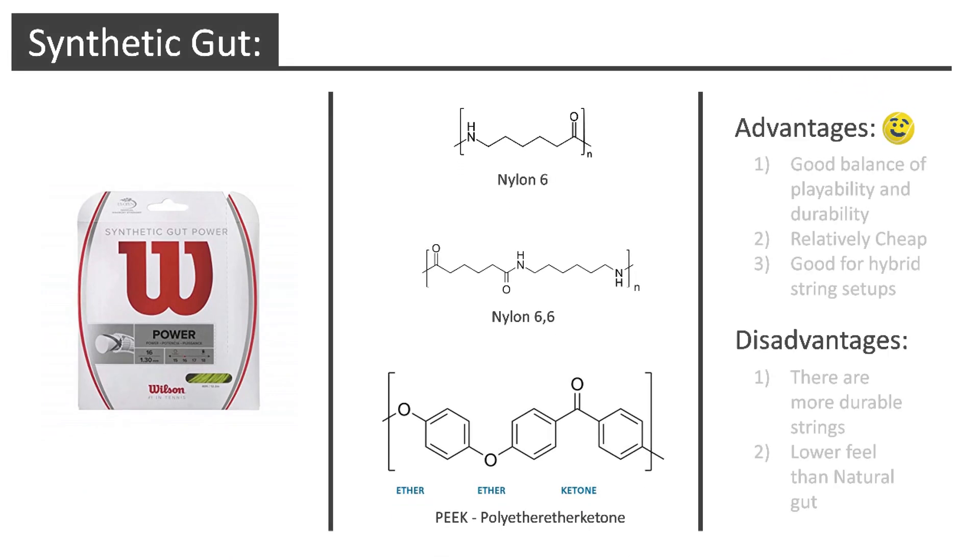The polymers nylon-6, nylon-66 and PEEK, polyether-ether ketone, are all used and can be layered up together to give some different string properties. Sometimes, a copolymer of nylon-6 and nylon-66 can also be used.